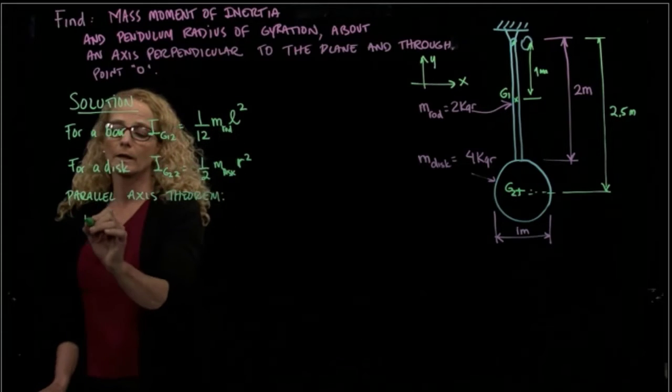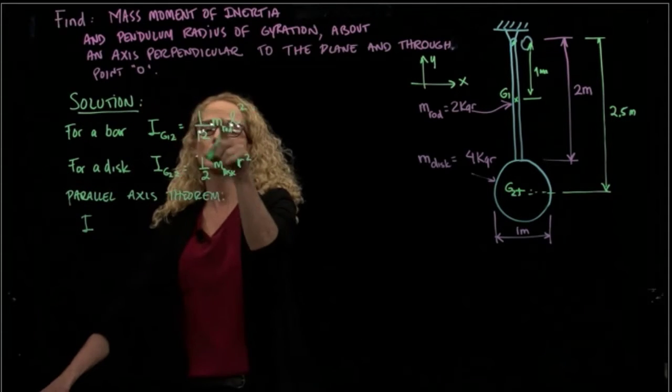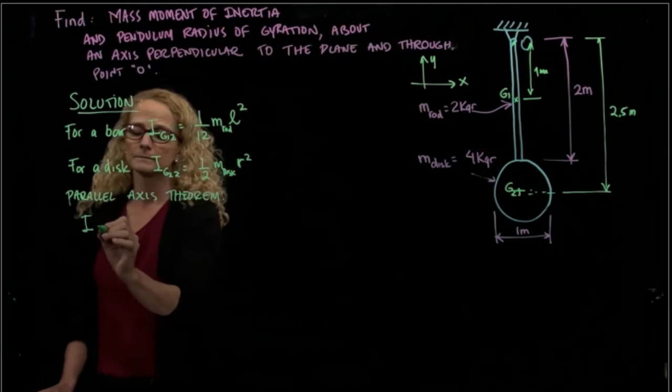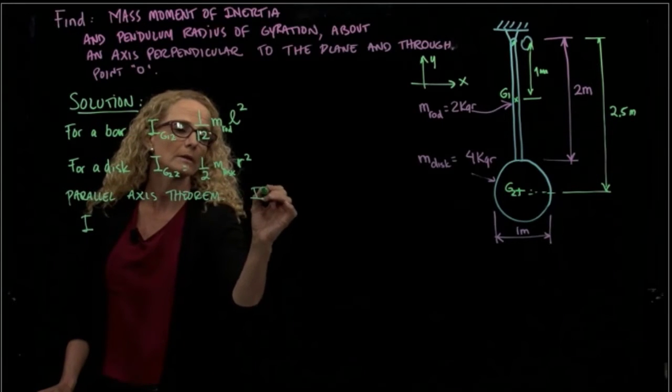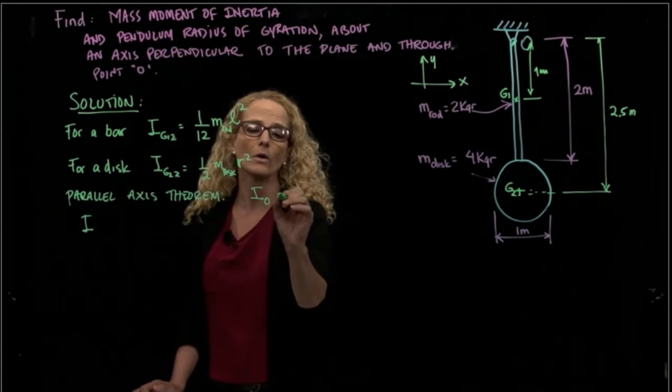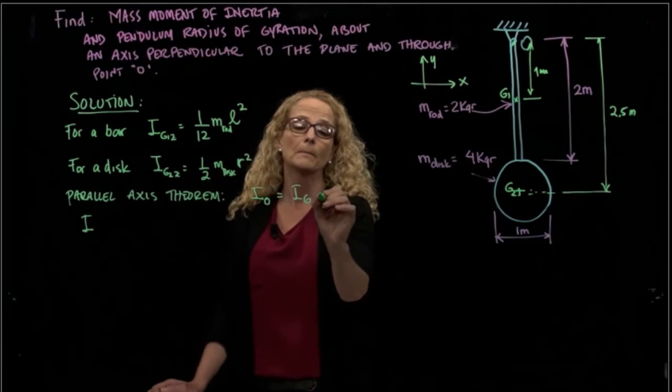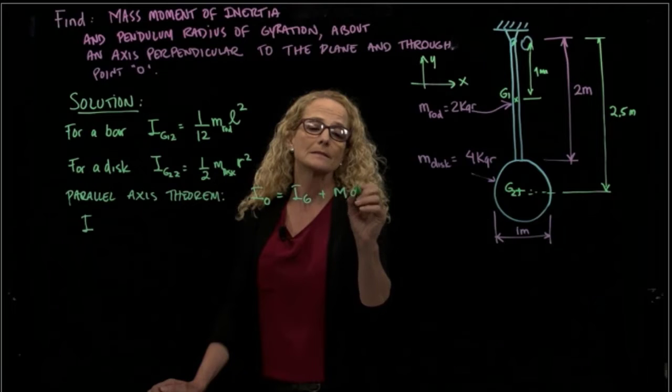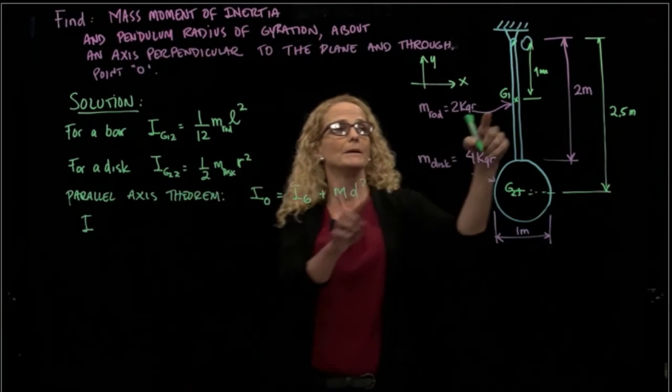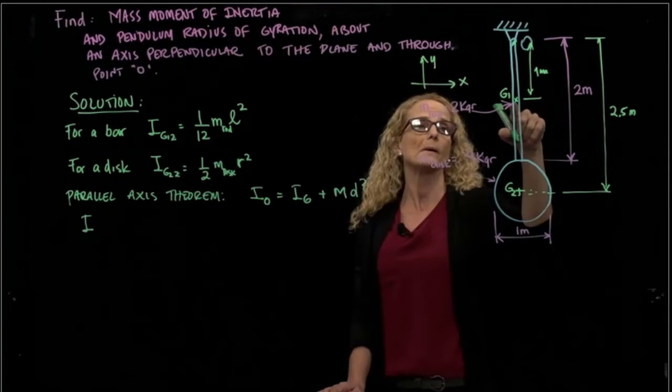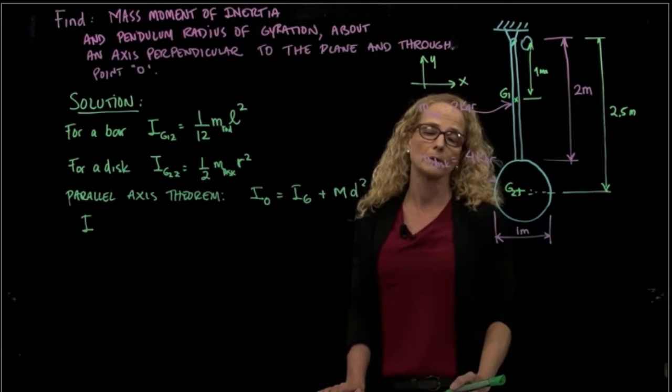So for the inertia of the rod, so if you remember, the axis theorem will say that in O it will be the axis in the center of mass, plus the mass times distance between that center of mass to the point that we want to calculate the distance.